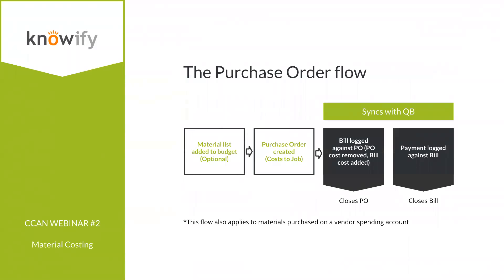The purchase order flow starts optionally with creating an itemized list of materials as your budget, so you don't have to re-enter them when ordering. Once you have the budget and create the purchase order, NOAAFI automatically uses that pricing to adjust the cost of the job. This is a temporary committed cost, since you'll log a bill against it later.